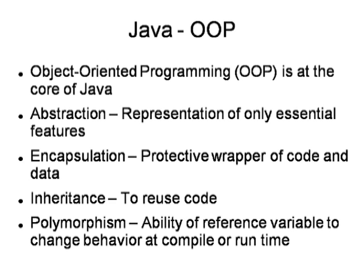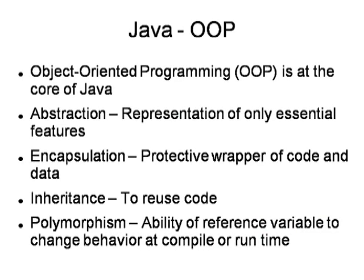The next OOP principle is encapsulation. Have you seen medicines? Medicines are perfectly wrapped — to protect that medicine from outside temperature, which can harm it. Likewise, our code is also like that. Outer code like hacking — for security purposes — some outer code can access our code and take benefits that are not recommended. So to properly arrange our code and for security reasons, we have to protect our data and provide access only by some public methods. That is encapsulation — it acts like a wrapper of code and data.